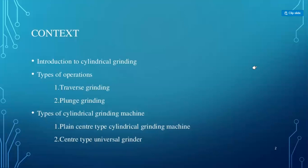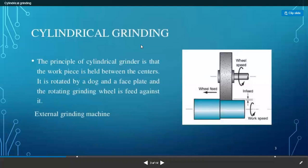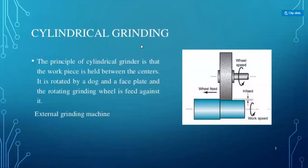The introduction of cylindrical grinding covers different types of operations and different types of cylindrical grinding machines. There are two operations: transverse grinding and plunge grinding. The types of cylindrical grinding machines are the plain center type and the center type universal grinding machine. In cylindrical grinding, the axes are parallel. The workpiece is held between centers, rotated by a dog or face plate, with the grinding wheel rotating against it.